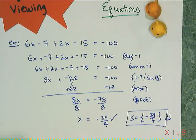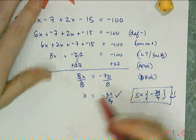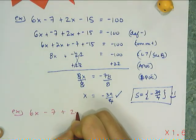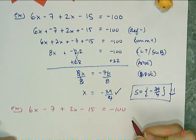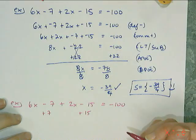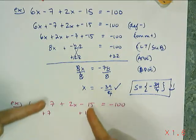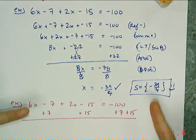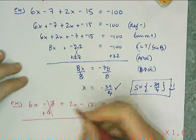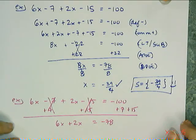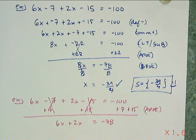Now there's another way to do this — not simplifying first. Instead of combining like terms, I'll go directly to strategic addition. I want to add 7 and 15 — that's the same as adding 22 — but I'll do it in two chunks. I have to add 7 and 15 to the other side as well because of the property of equality. Those cancel, and I'm left with 6x plus 2x equals negative 78.